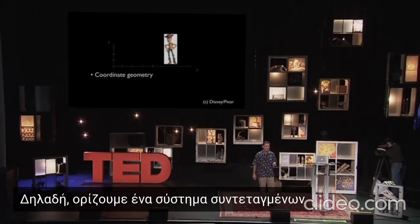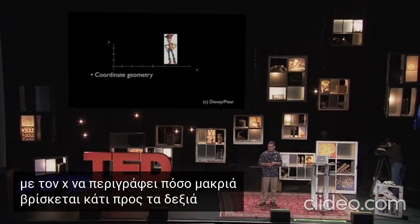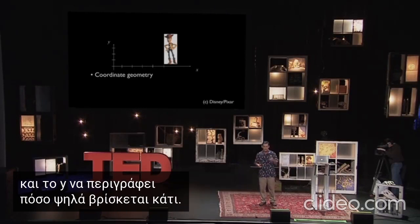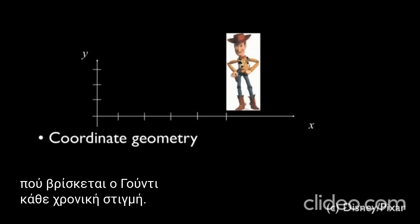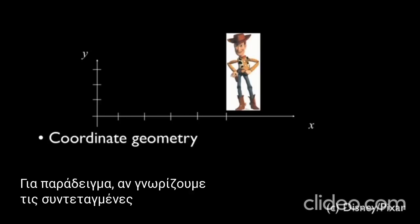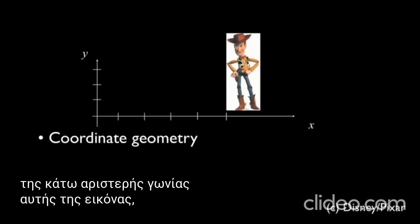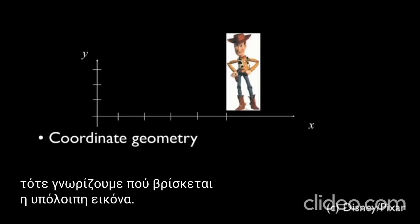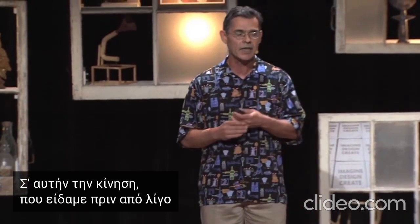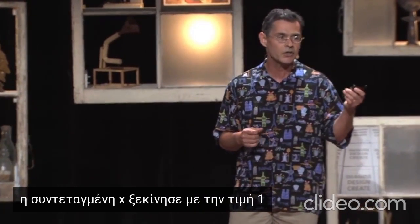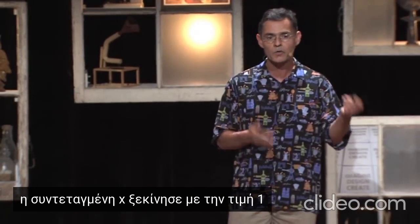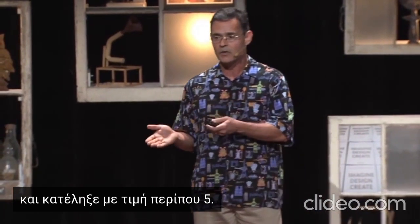We lay down a coordinate system with X describing how far something is to the right, and Y describing how high something is. With these coordinates, we can describe where Woody is at any instant in time. For instance, if we know the coordinates of the lower left corner of that image, then we know where the rest of the image is. In that little sliding animation, that motion we call translation — the X coordinate started with a value of 1 and ended with a value of about 5.